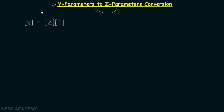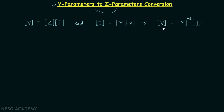We know that when we multiply the impedance matrix and the current matrix we get the voltage matrix. We also know that when we multiply the admittance matrix and the voltage matrix we get the current matrix. From here we can say that the voltage matrix is equal to the inverse of the admittance matrix multiplied by the current matrix. Comparing these two, we find the impedance matrix is equal to the inverse of the admittance matrix.